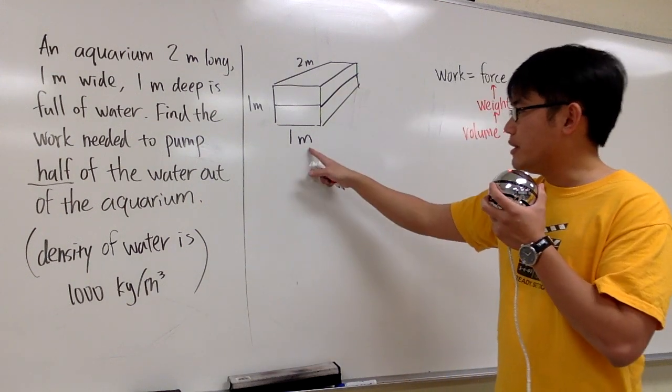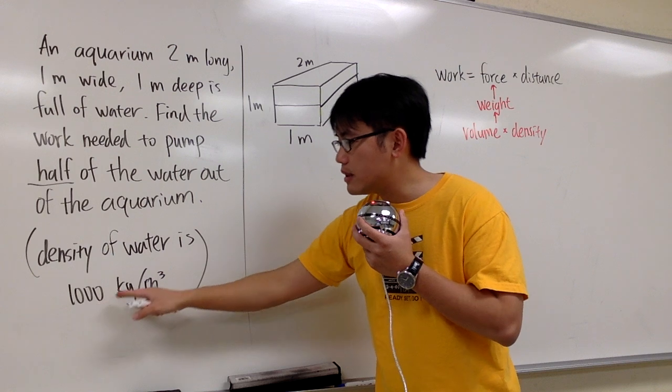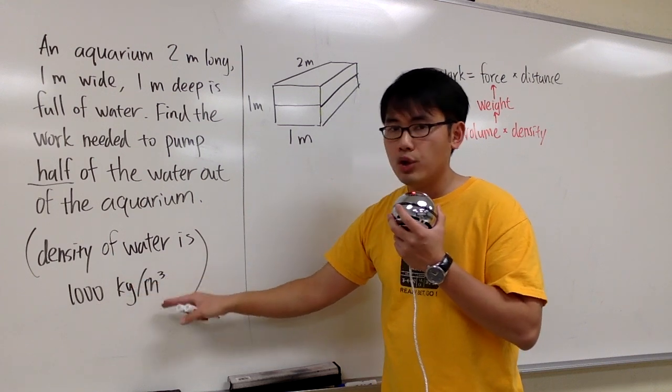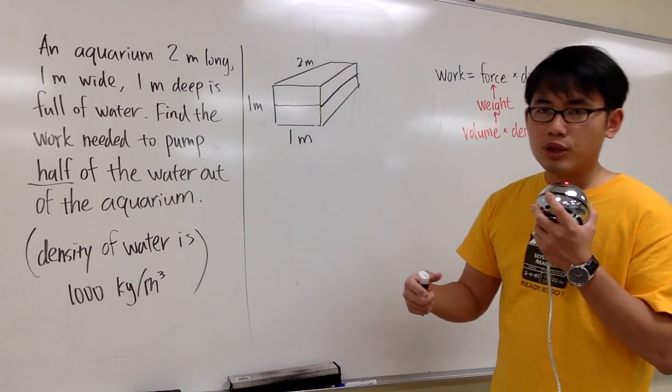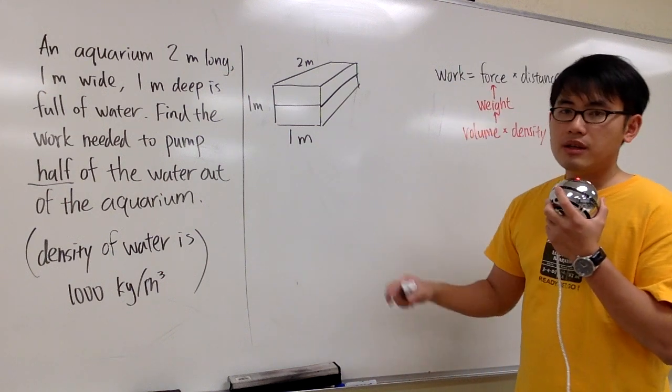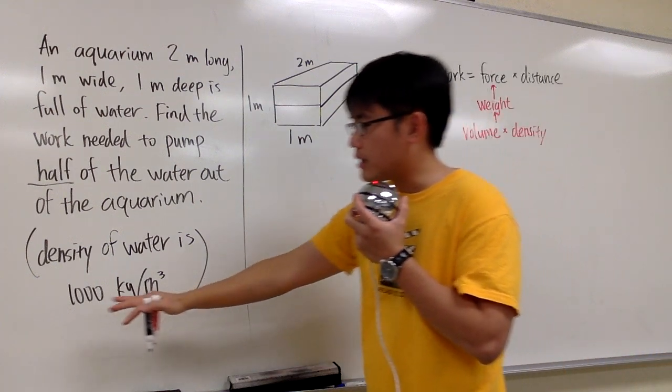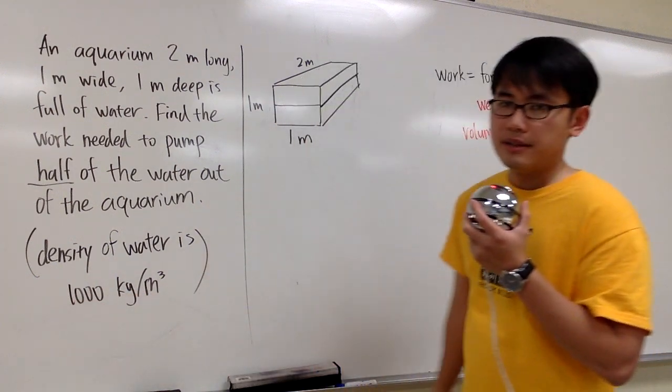If you are using meters, then we have to multiply by the density of the water, which is 1,000 kilograms per cubic meter. We also have to multiply by 9.8 for the gravity. If we are using feet, we just need to multiply by 62.5. But in this situation, we will focus on 1,000 and then the 9.8.